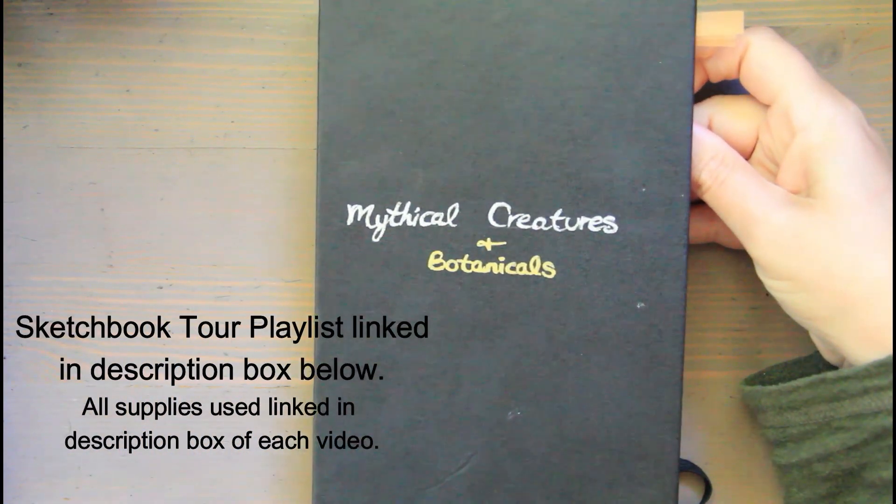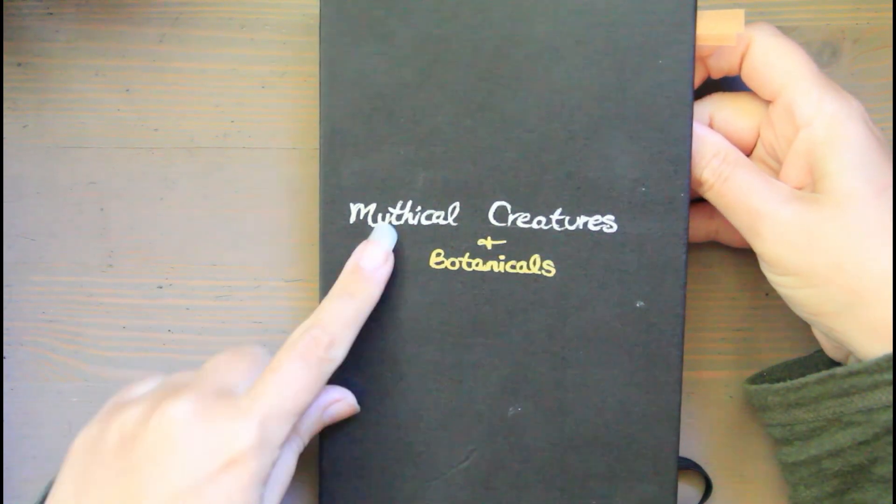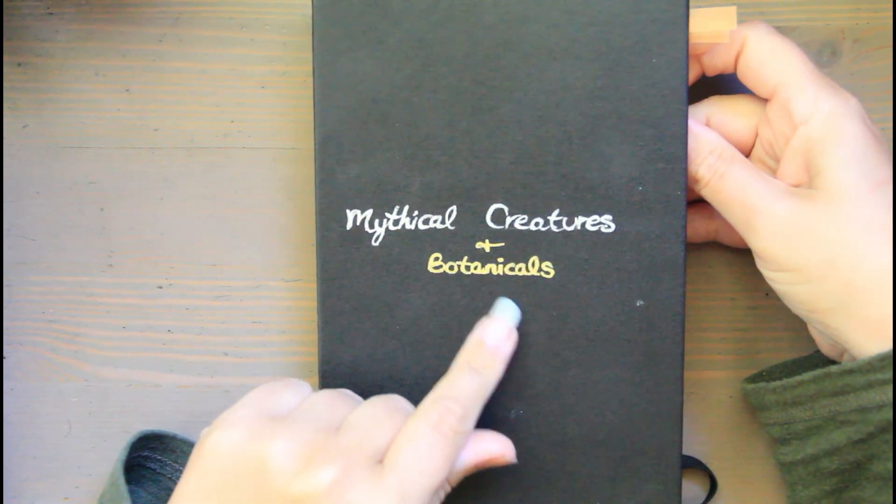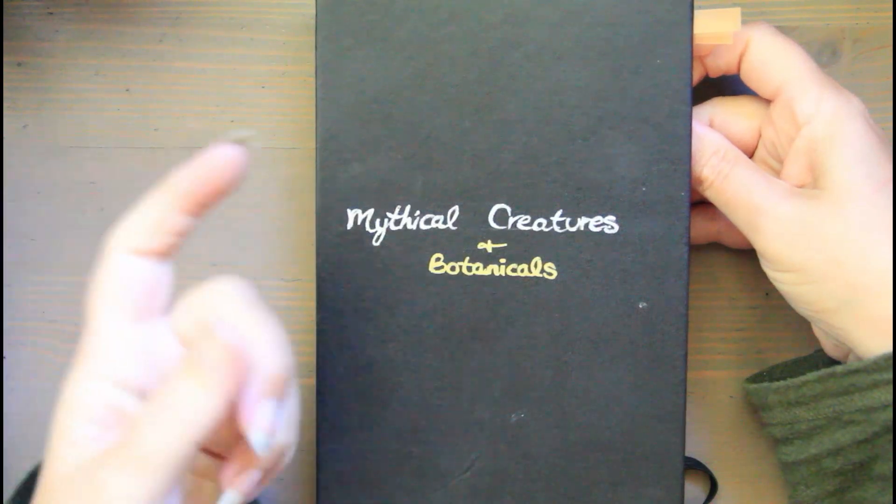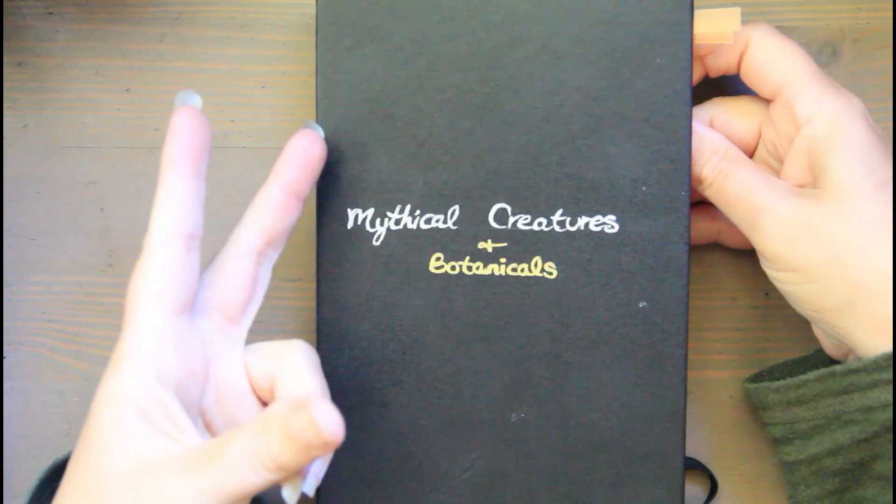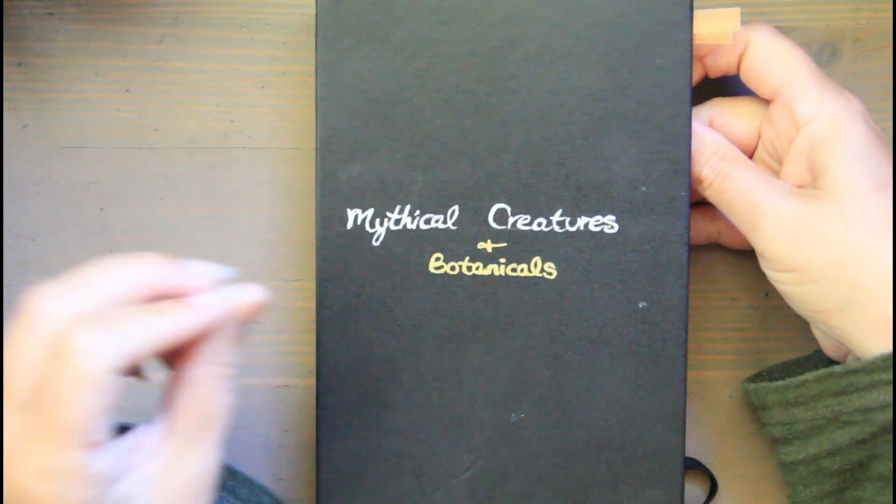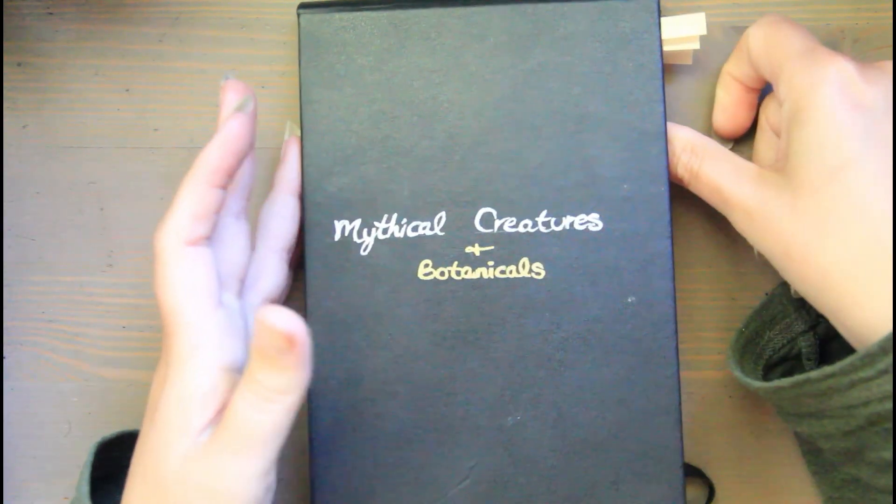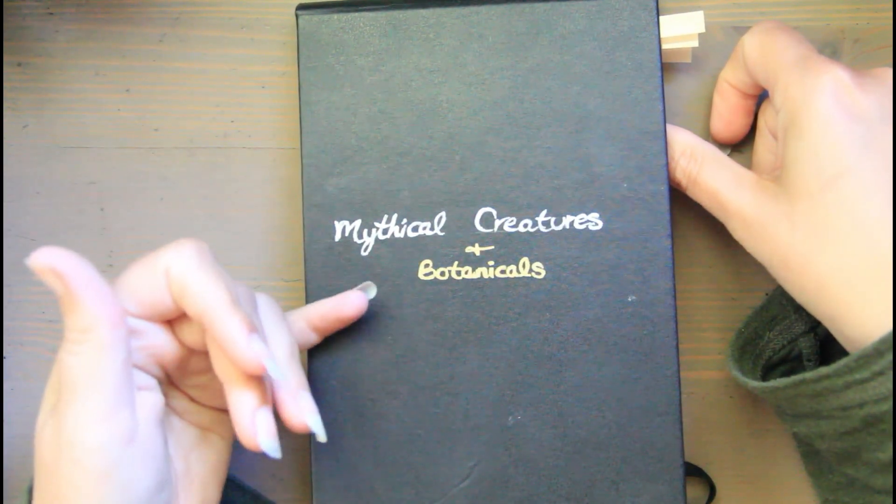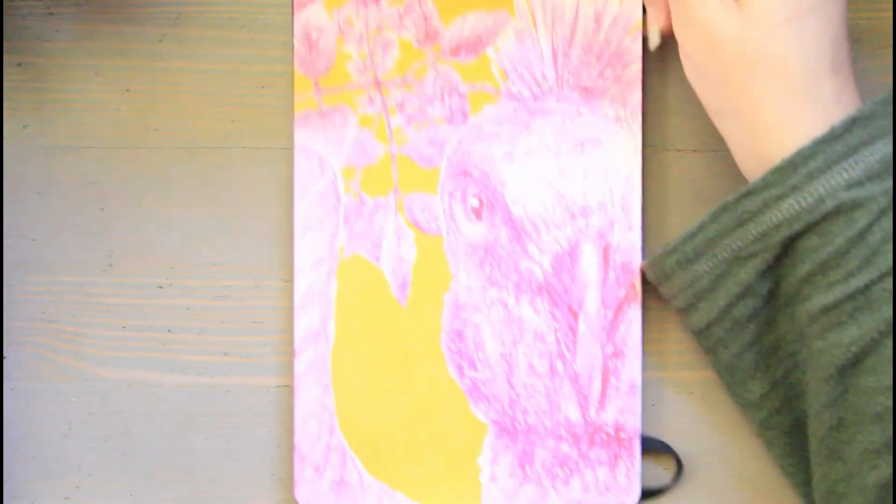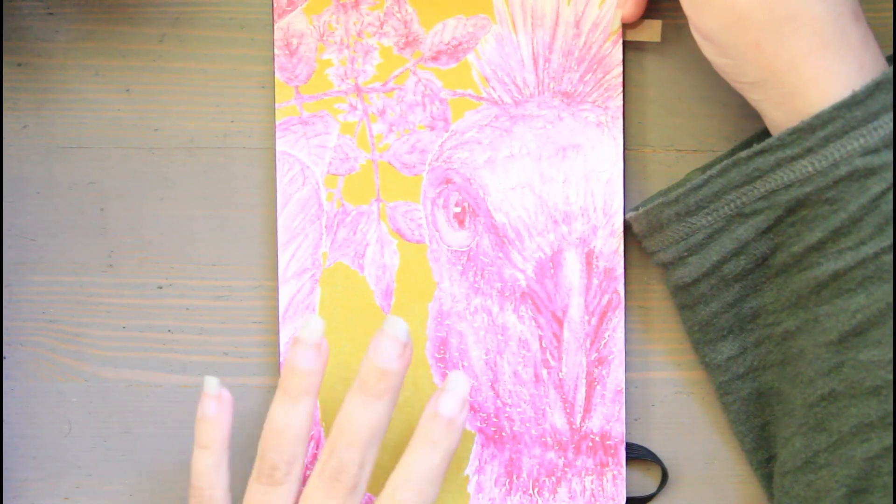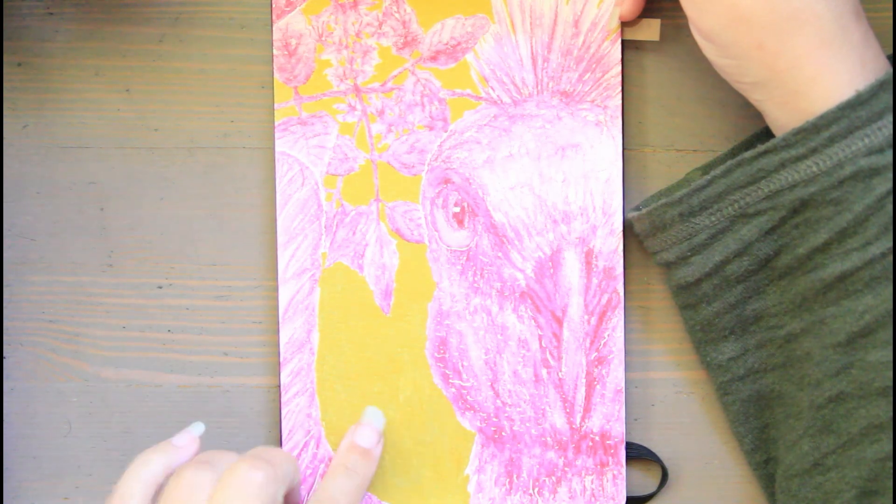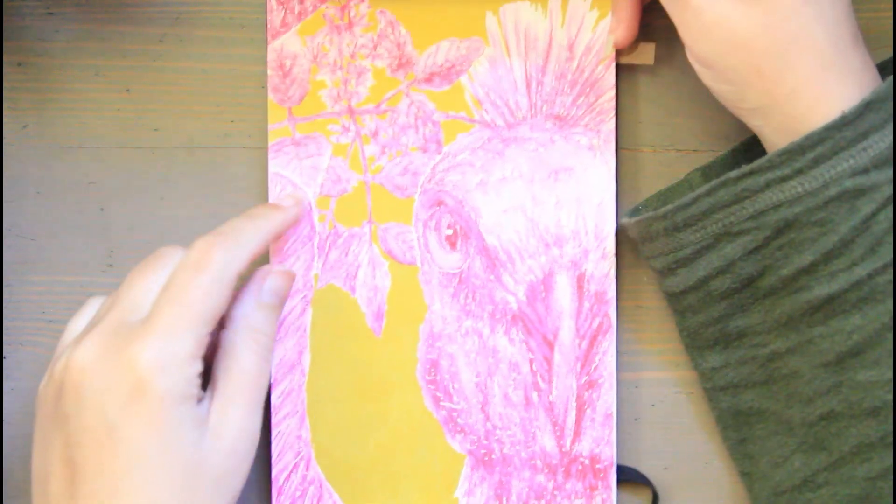So this one is from 2021, and I did watercolor pencil. This is a Moleskin watercolor, and this is mythical creatures and botanicals. So I paired a mythical creature with a plant, and I tried to have them relate a little bit in name because these mythical creatures don't exist, so I get to make it up as I go along, but I have a repeating pattern. These are the Museum Aqua Caran d'Ache, and these are Uniball Signo Metallic. So this is Phoenix and the plant is called Ash.